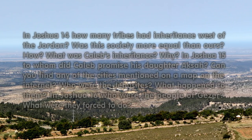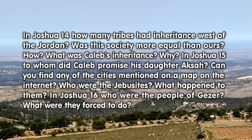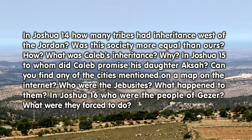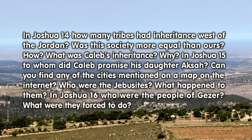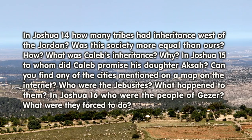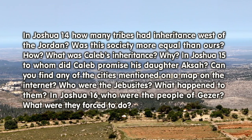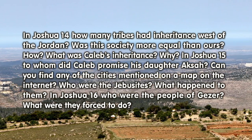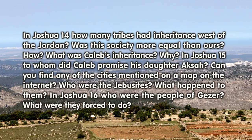In Joshua 14: How many tribes had inheritance west of the Jordan? Was this society more equal than ours? How? What was Caleb's inheritance? Why?